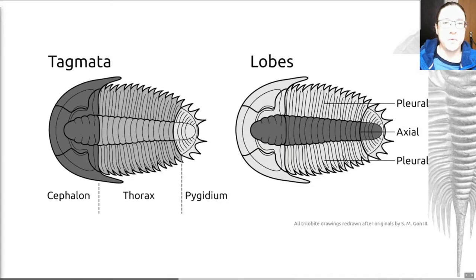The bodies of arthropods are split into specialized regions and these are called tagmata. The specialization of these regions is called tagmosis and in trilobites there are three tagmata. These are the cephalon, the head at the front of the animal, the thorax, the middle bit when going from head to tail, anterior to posterior, and the pygidium, the posterior most part of the animal.